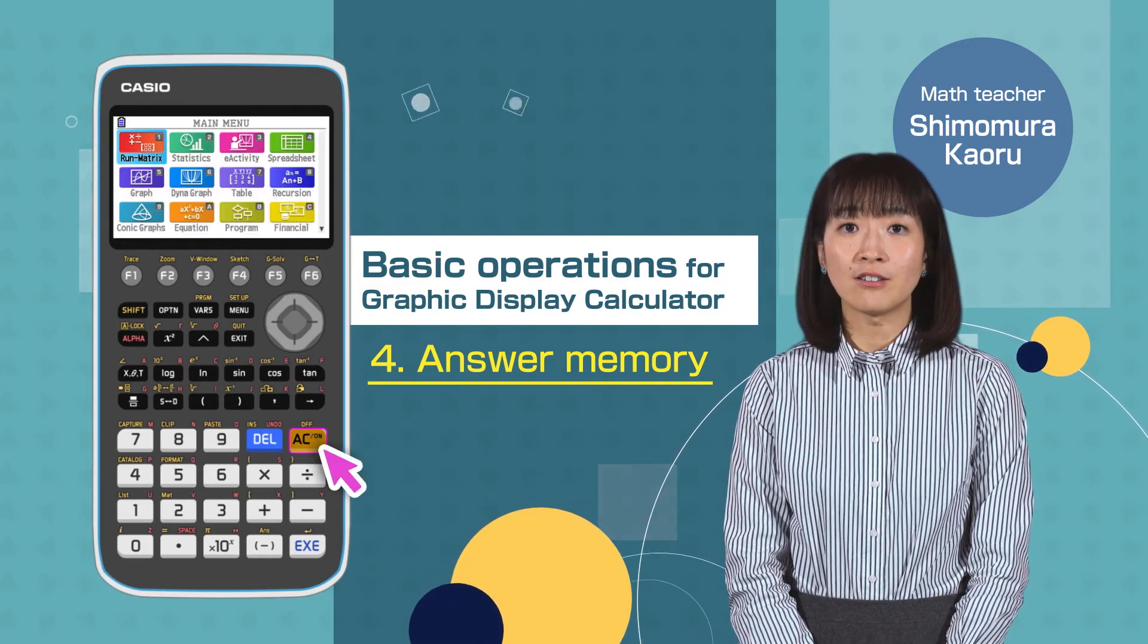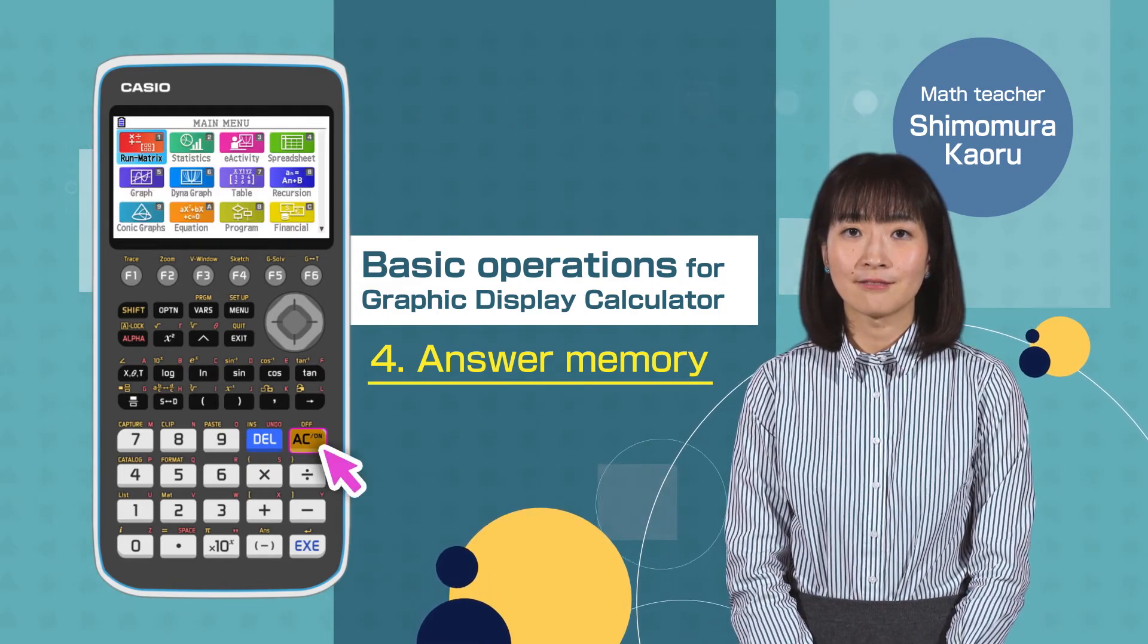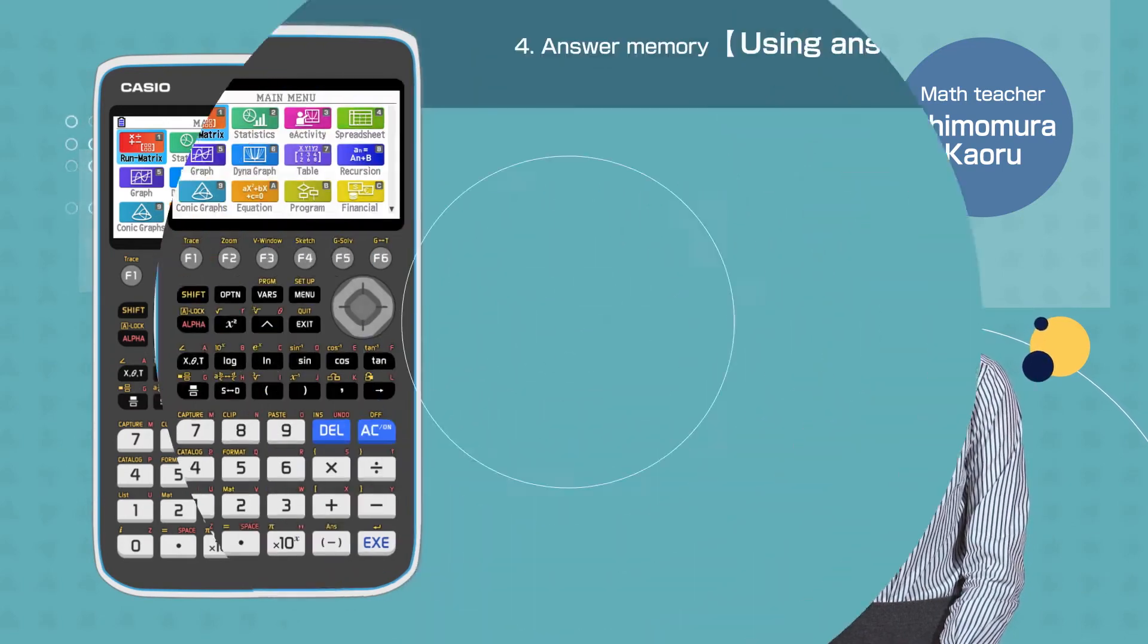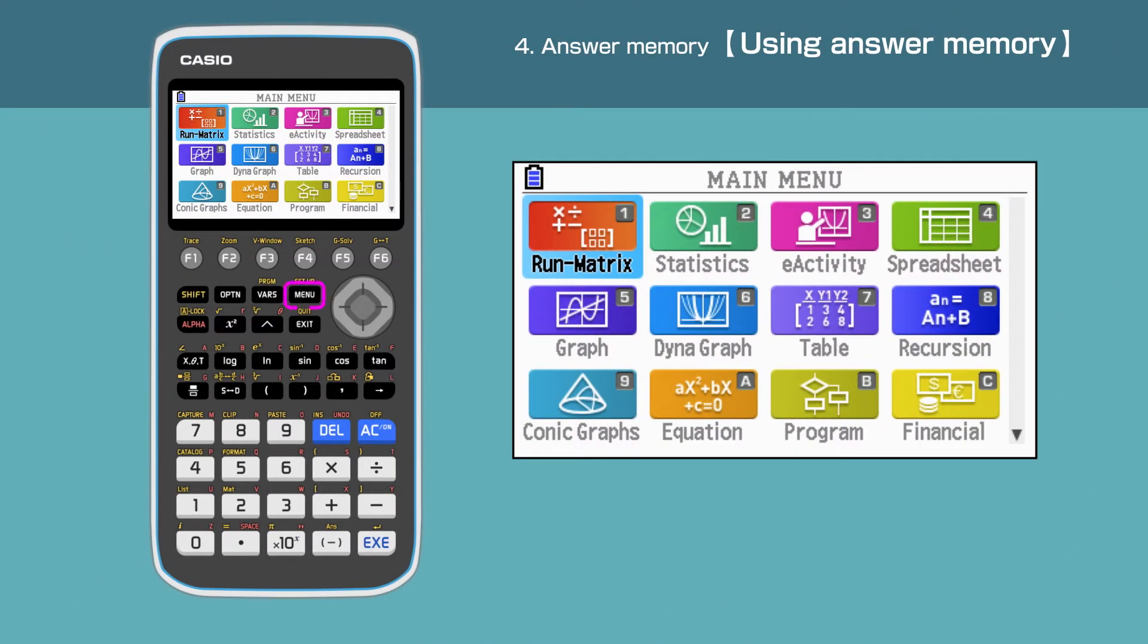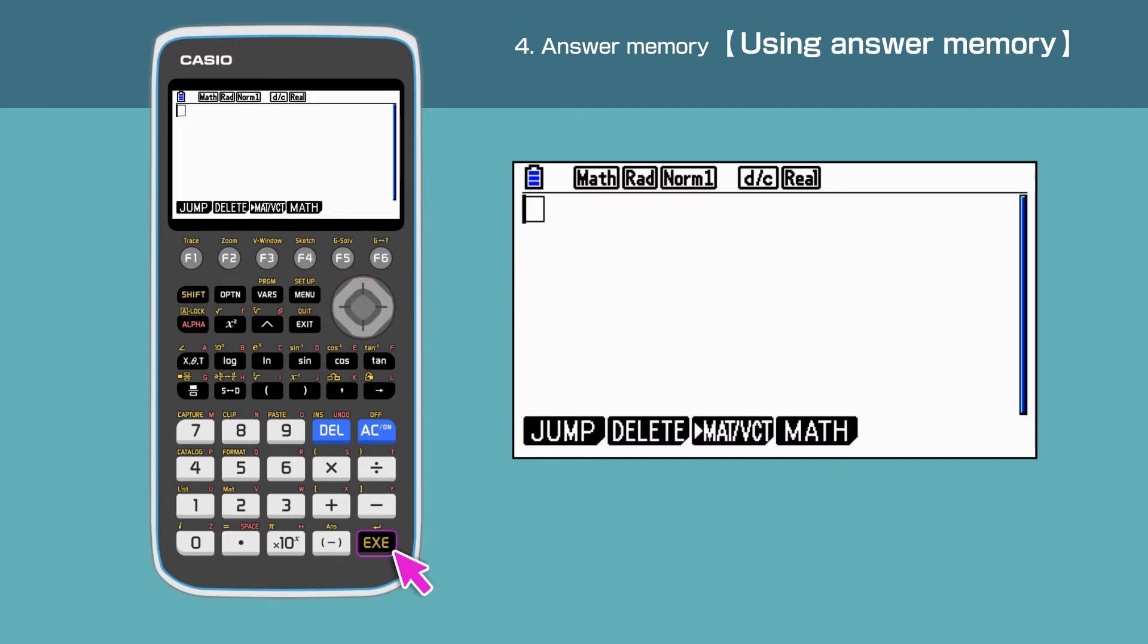Switch on your calculator, pressing AC button. Press the menu button to open the main menu. Press 1 to enter the Run Matrix menu, or move the cursor and highlight 1, Run Matrix, then press Execute.